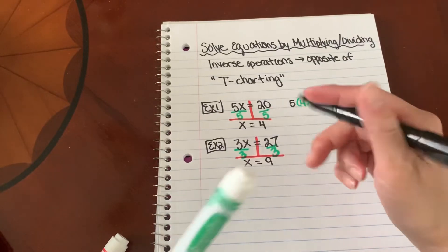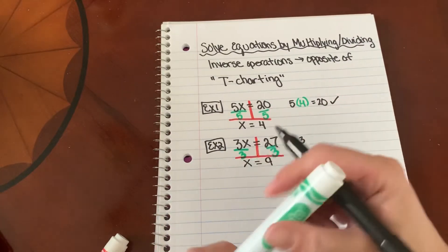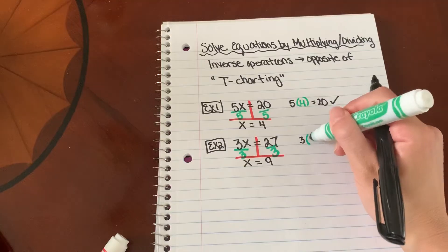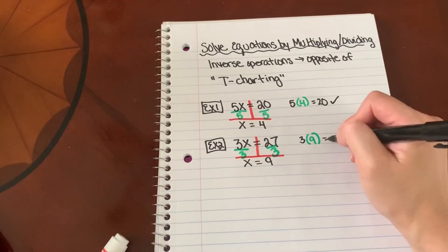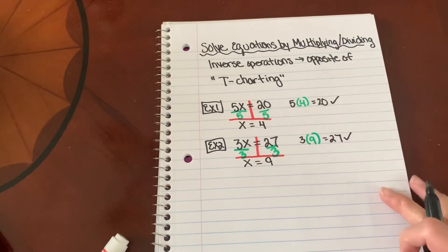So again, I can plug this back in. So I have 3 times 9. Does that equal 27? Yes. It sure checks out.